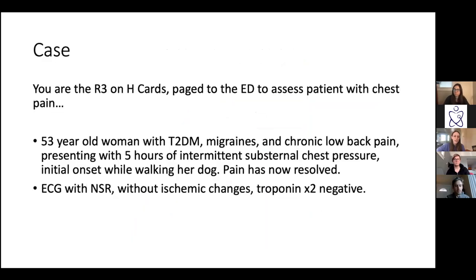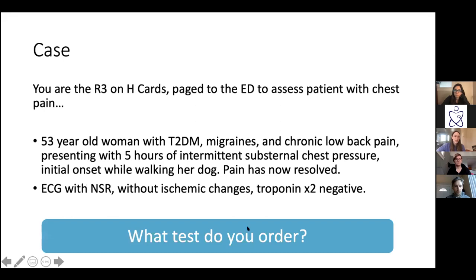Starting with a case: you are the third-year resident on Harborview Cardiology at about 2 a.m., paged to the ED for a patient with chest pain. This is a 53-year-old woman with a history of diabetes, migraines, and chronic low back pain. She came in with about five hours of intermittent substernal chest pressure, initially brought on by walking her dog. The pain has now resolved. Workup showed a normal ECG with normal sinus rhythm, no ischemic changes, and two negative troponins over four hours. You feel she has new stable angina appropriate for outpatient evaluation, and your job is to order the stress test. You have two decisions: what is your stress modality, and how are you going to image?